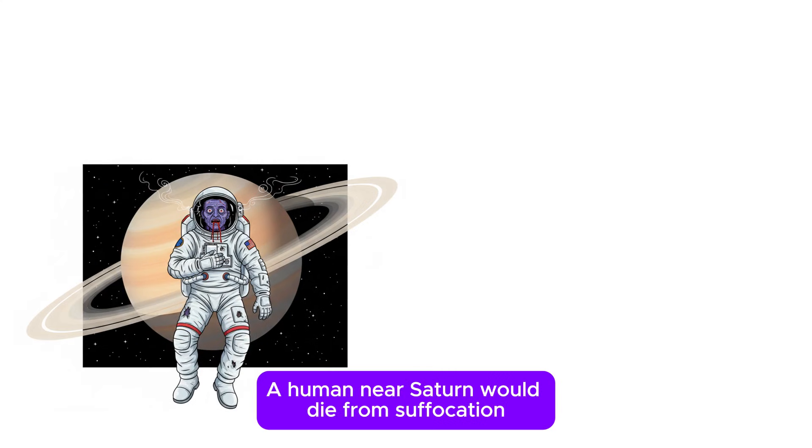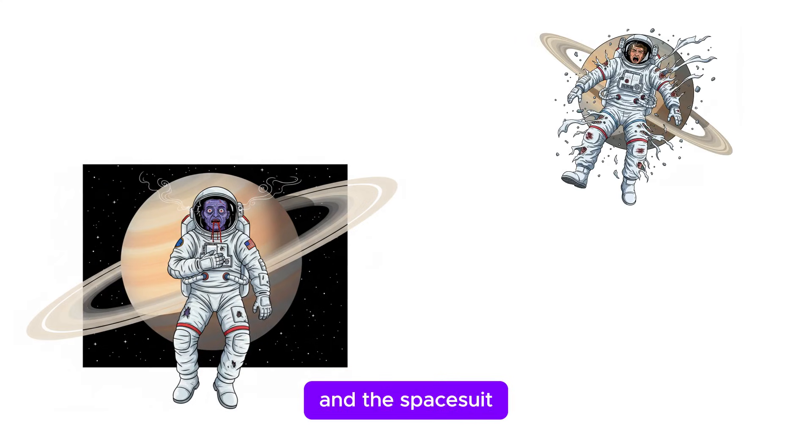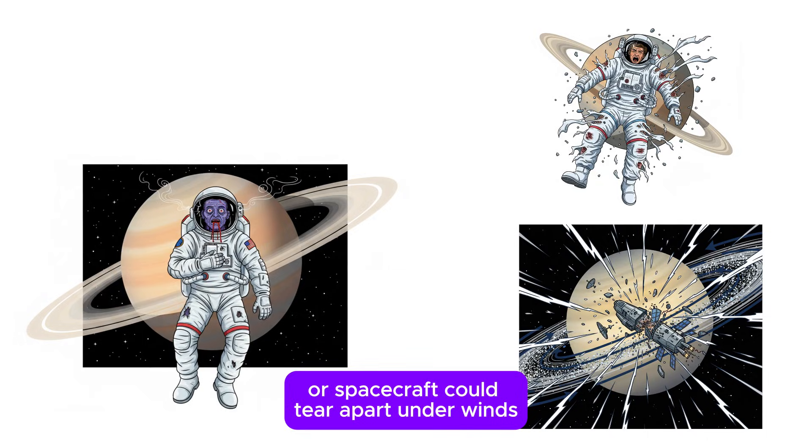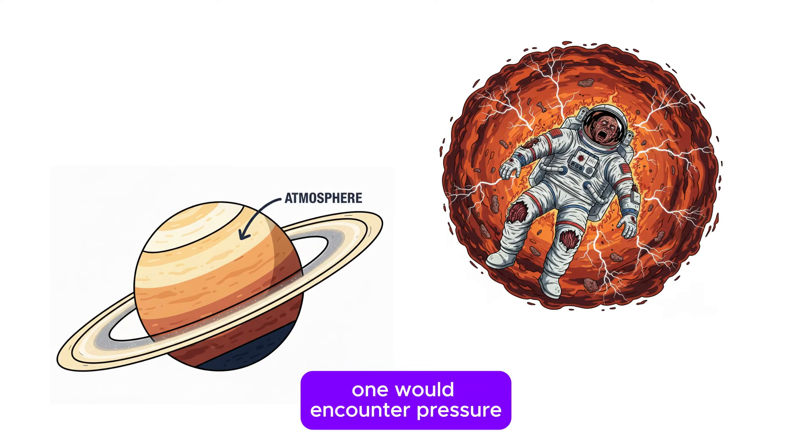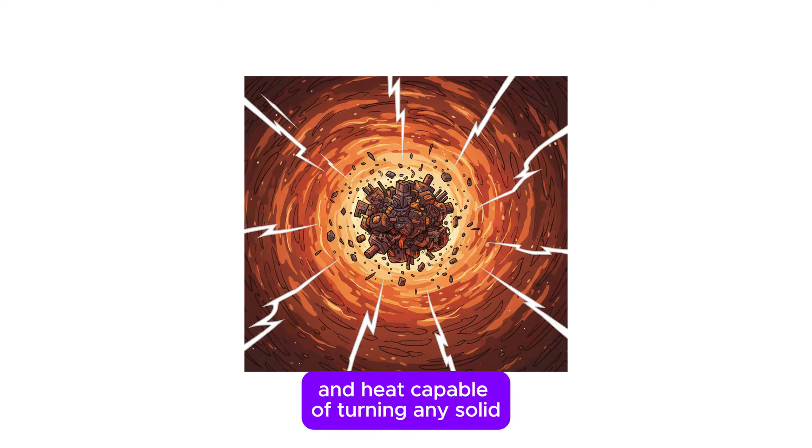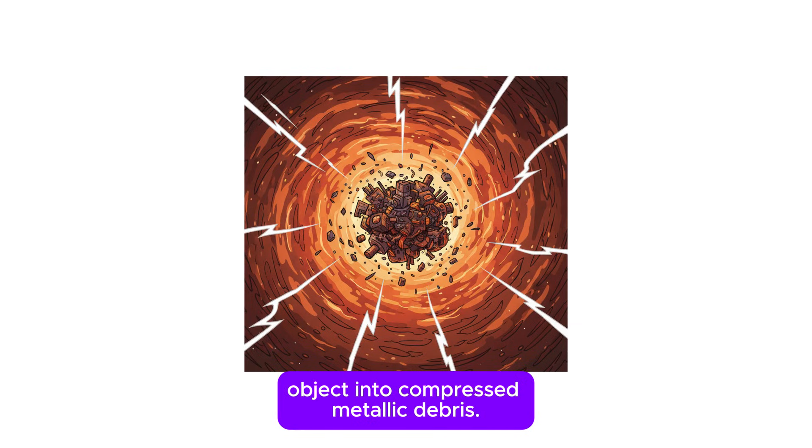A human near Saturn would die from suffocation, and the spacesuit or spacecraft could tear apart under winds exceeding the limits of any known space structure. Falling into its atmosphere, one would encounter pressure and heat capable of turning any solid object into compressed metallic debris.